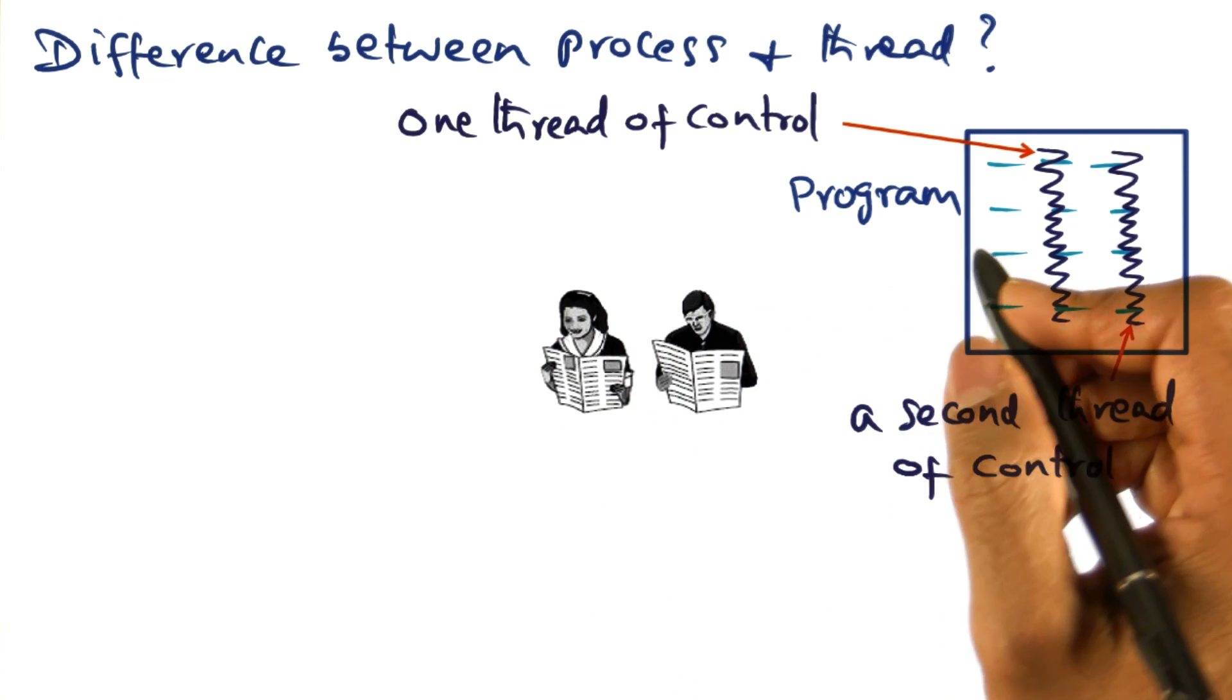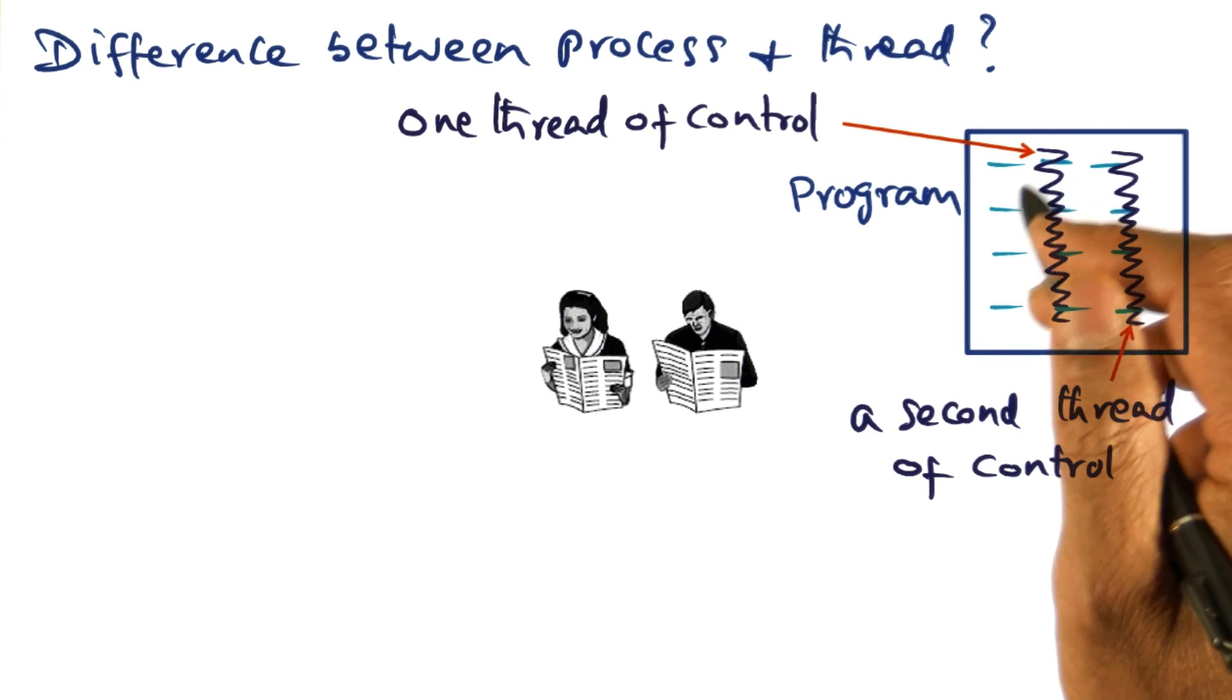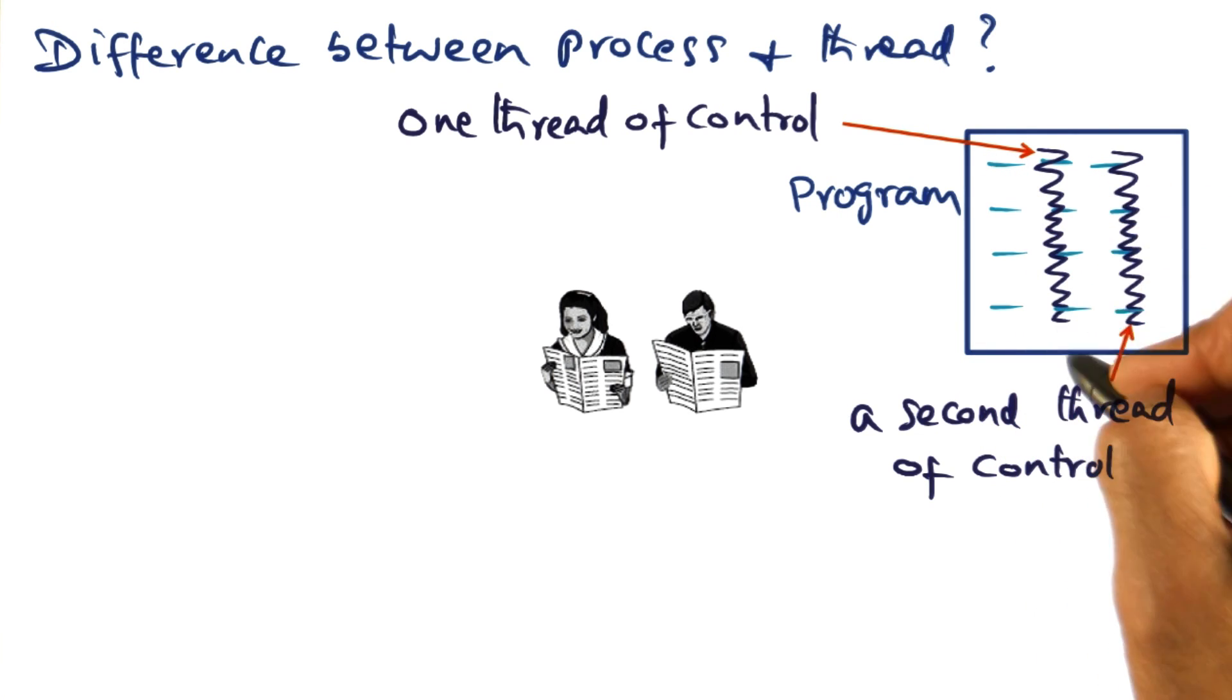Now, similarly, we can have multiple lives coursing through the program, each blazing a completely different trail through the code and data structures of the program. Now, each of this is a thread of control.